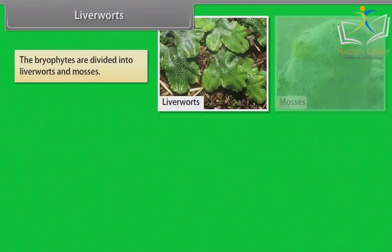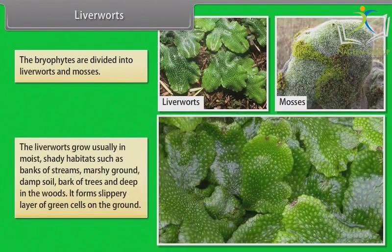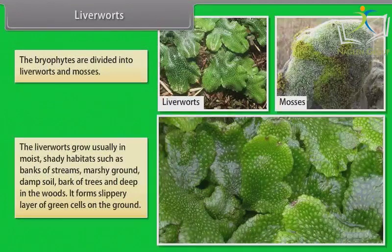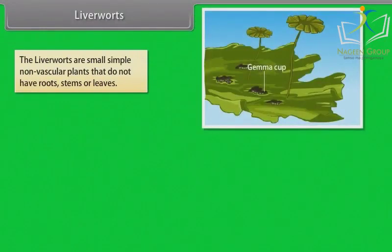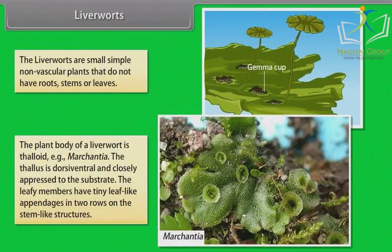The bryophytes are divided into liverworts and mosses. Liverworts usually grow in moist, shady habitats such as banks of streams, marshy ground, damp soil, bark of trees, and deep in the woods, forming a slippery layer of green cells on the ground. Liverworts are small, simple, non-vascular plants that do not have roots, stems, or leaves. The plant body of a liverwort is thaloid, as in Marchantia. The thallus is dorsiventral and closely appressed to the substrate; leafy members have tiny leaf-like appendages in two rows on stem-like structures.